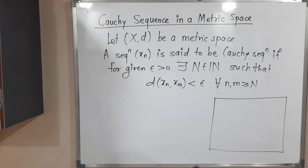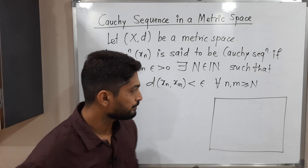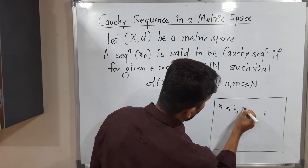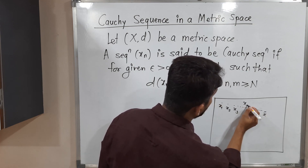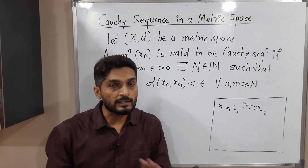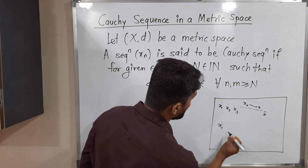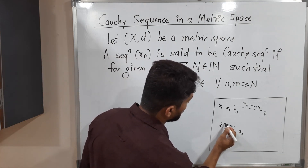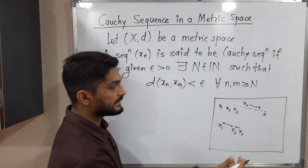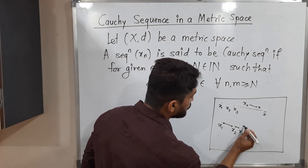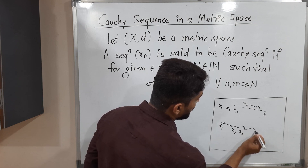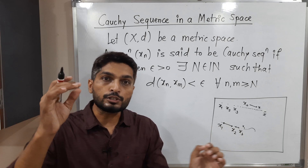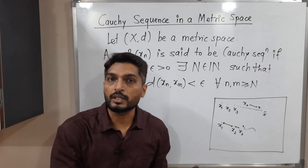Let us understand this with the help of a diagram. Suppose this is the metric space (X, d). For convergent sequence, this is the fixed point x, and x1, x2, x3 are all moving towards that single point — so we say the sequence x_n converges to x. But in the case of Cauchy Sequence, there is no fixed point. x1 is here, x2 is here, x3 is here, and the distance between x2 and x3 is reducing. x4 will be more close, x5 more so. All points come closer and closer to each other — there is no fixed target. The distance between successive terms is reducing, so we call it a Cauchy sequence.